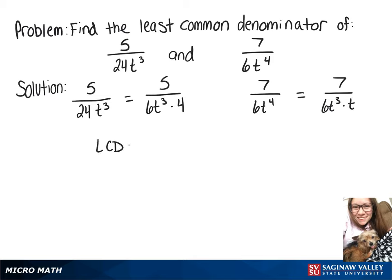The least common denominator will be whatever factor they have in common times whatever ones they don't. Those denominators both have a 6t cubed and then our other factors are 4 and t. When you multiply all of those together we get our least common denominator 24t to the 4th.